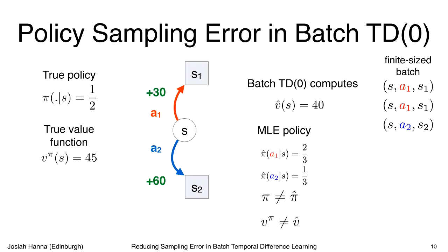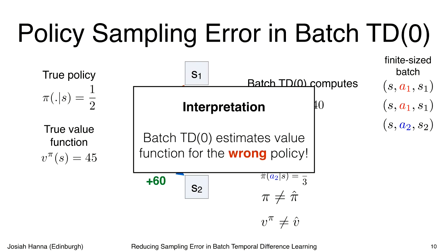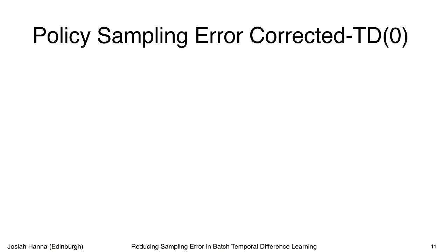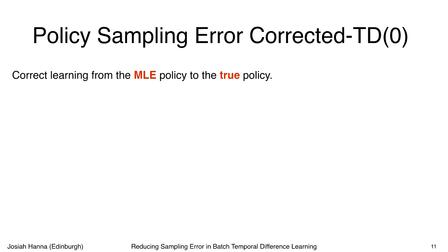Our interpretation of this, which motivates our second contribution, is that batch temporal difference learning can be understood as estimating the value function for the wrong policy — it learns the value function for the maximum likelihood policy instead of the true policy of interest. Seeing this limitation motivates our proposed solution, which we call policy sampling error corrected temporal difference learning, or PSEC-TD. The key idea is to correct learning from the maximum likelihood policy to the true policy. We use a technique called importance sampling to accomplish this.